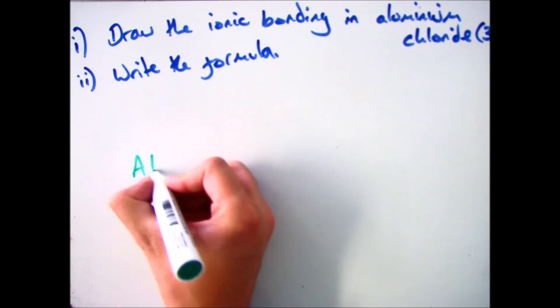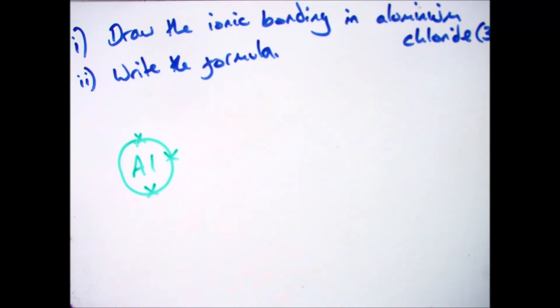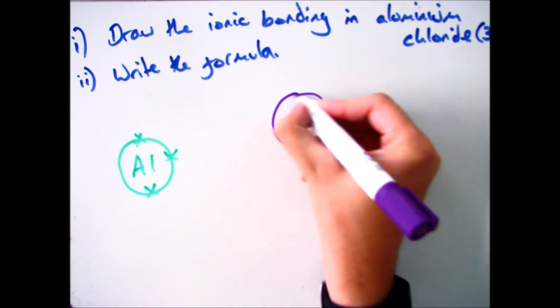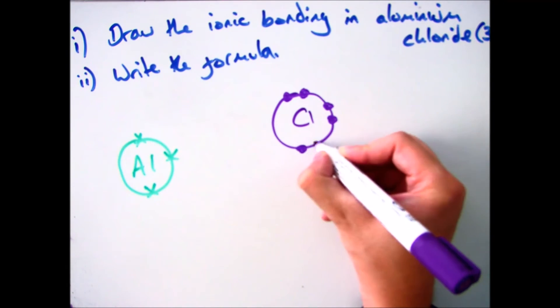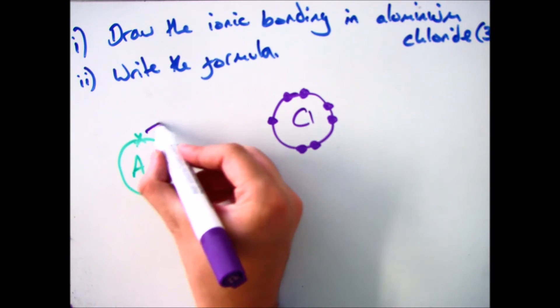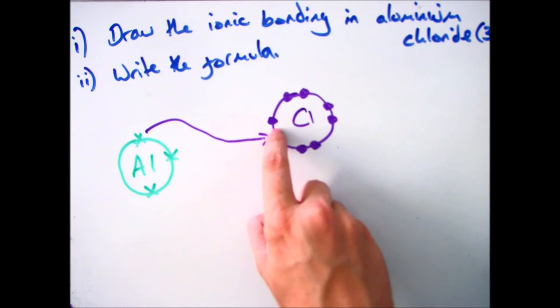Okay, so before you get to the actual marking bit, what I would do is draw out the atom. So aluminium has got three in the outer shell, and chlorine has got seven in the outer shell. So the first thing you'll want to do is transfer one of those electrons from aluminium over.